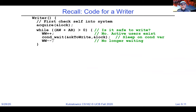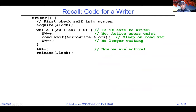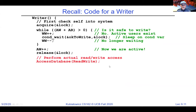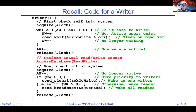On writer exit: acquire the lock, decrement AW, then check — if there's a waiting writer, signal it to wake up. Otherwise, if there are waiting readers, broadcast to them all, then release the lock. We broadcast to readers because we can have multiple readers simultaneously. Broadcasting will work even if slightly inefficient — we'll get to that.